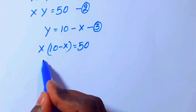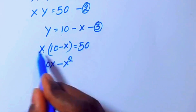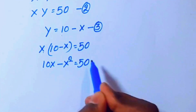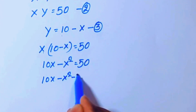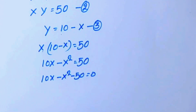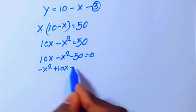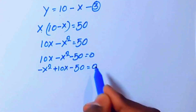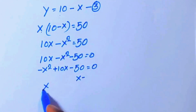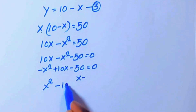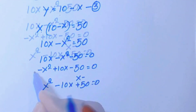Multiplying this out: 10x minus x squared equals 50. Bringing 50 to the left-hand side: 10x minus x squared minus 50 equals 0. Rearranging: minus x squared plus 10x minus 50 equals 0. Since there is a minus sign, we multiply through by minus 1, giving us x squared minus 10x plus 50 equals 0.